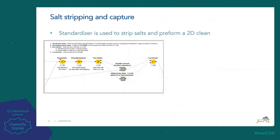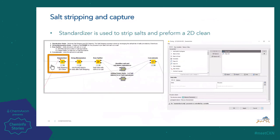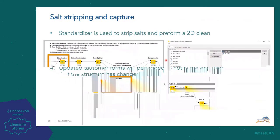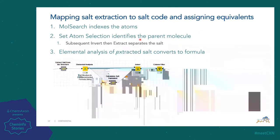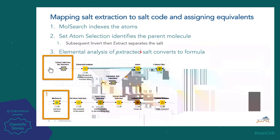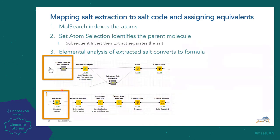Salt stripping and capture is the next major focus. The Standardizer is used to strip the salts and perform a 2D clean. If we click on the Standardizer node, it opens up to show the various options you can select — in this particular case we have strip salts and clean 2D selected. To map the salt extraction into the salt code and assign equivalents happens in the next phase. We open up this node and the first thing we do is get the atom index, using the Mole Search. Then we set the atom selection to identify the parent molecule.